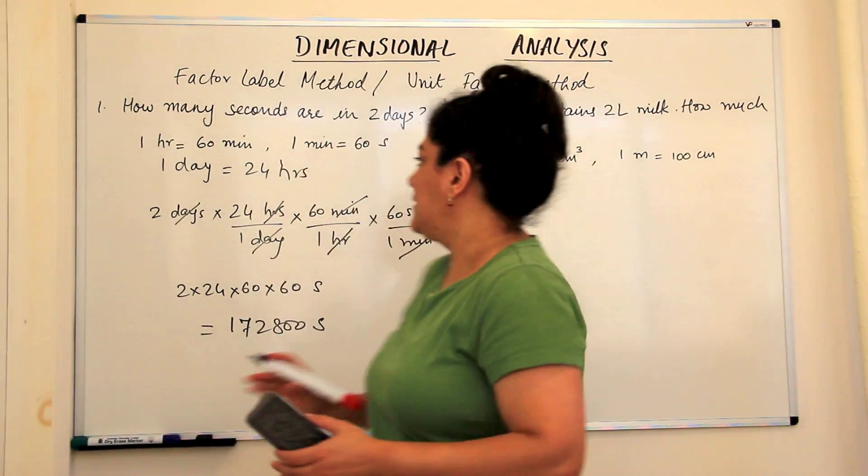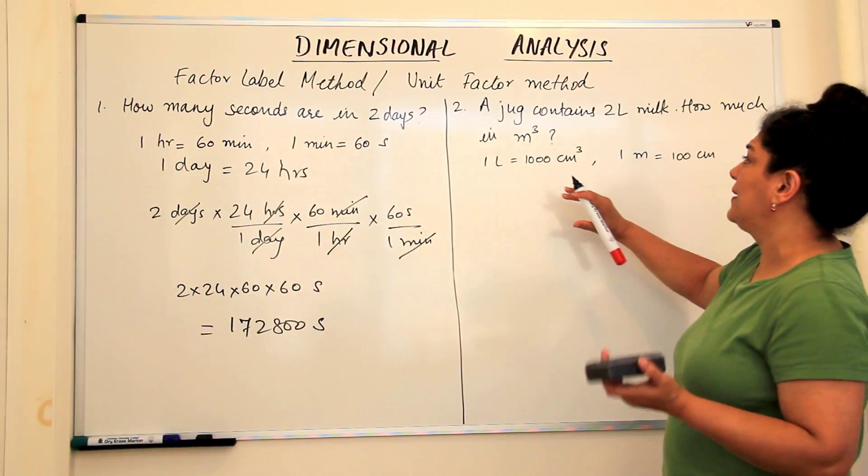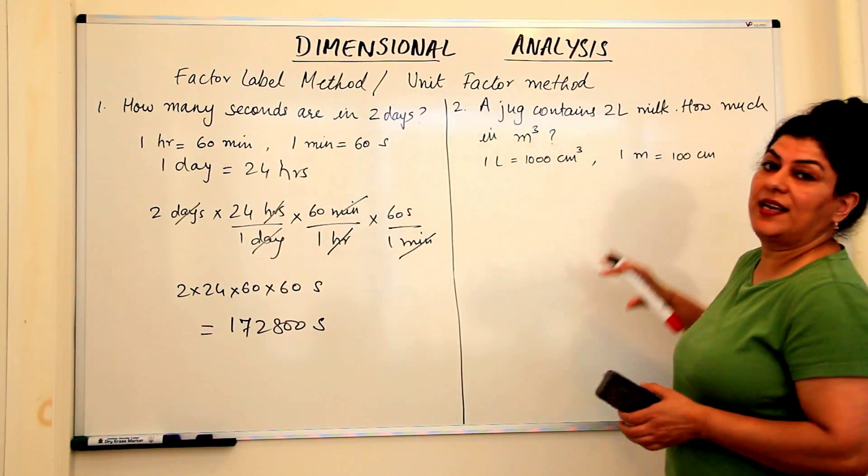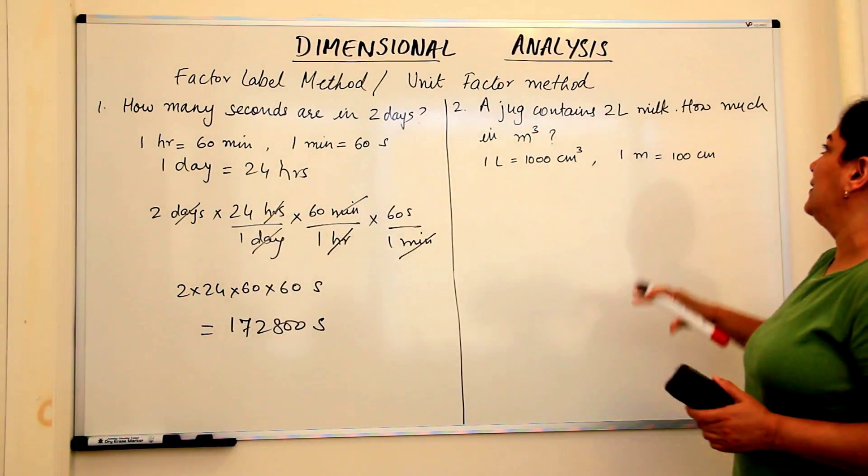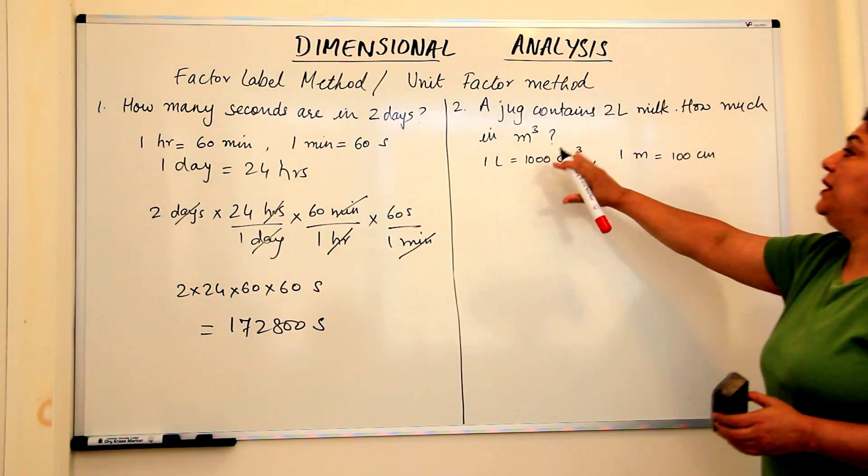So let us take another problem now to be clearer about it. A jug contains 2 litres of milk. How much would it be in metre cube?